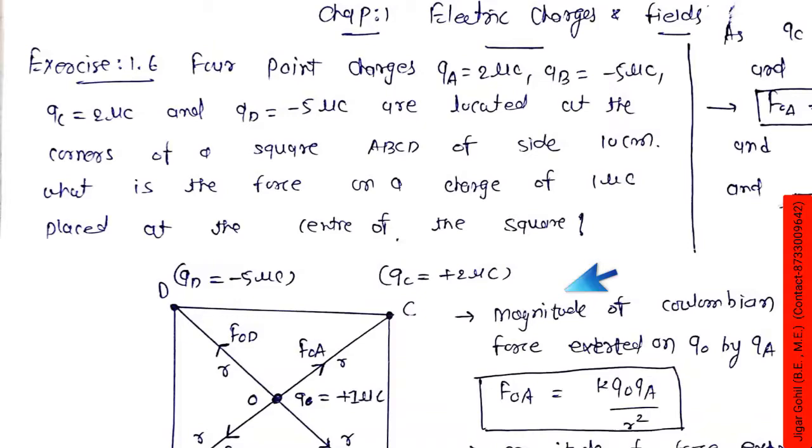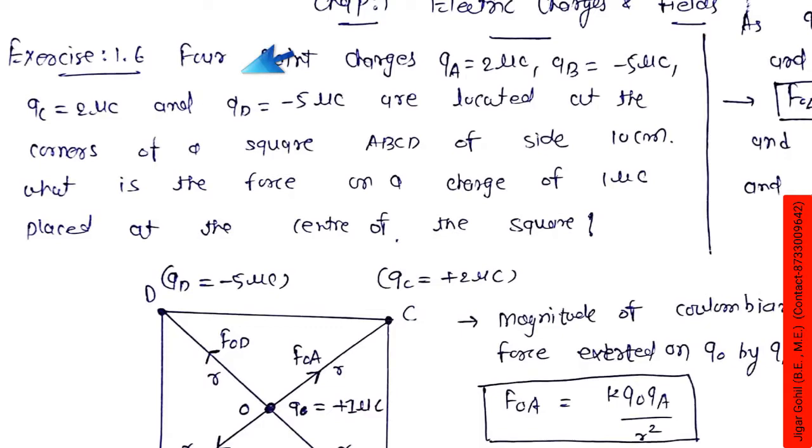Hello and welcome to Standard 12 Physics. In this video you will see the solution of Chapter 1, Electric Charges and Field, Exercise 1.6. The question given is: four point charges qa = 2 microcoulomb, qb = -5 microcoulomb, qc = 2 microcoulomb.